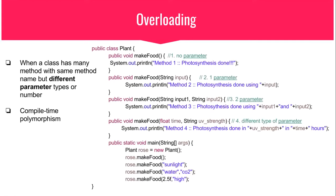There are two ways to achieve polymorphism. One is through static binding or overloading, and the other is called dynamic binding or runtime polymorphism. Compile-time polymorphism is also known as early binding or method overloading, where a class has many methods that share the same method name.